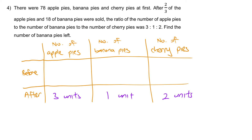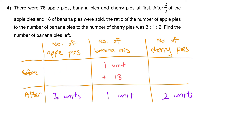Working backwards: 18 banana pies were sold, so we return those 18, giving us 1 unit plus 18 for banana. Then, since 2 thirds of apple pies were sold, the 3 units remaining must be 1 third of the original. Therefore, the original number of apple pies must be 9 units.